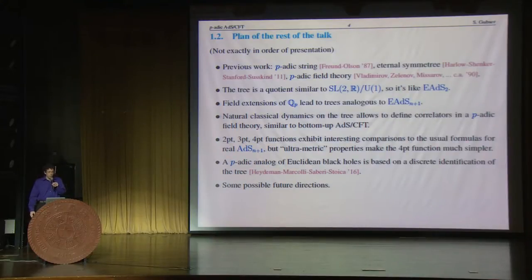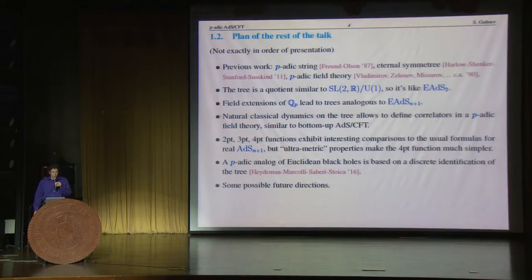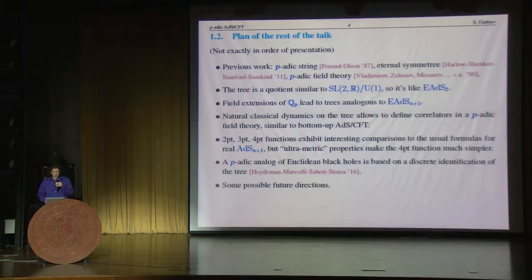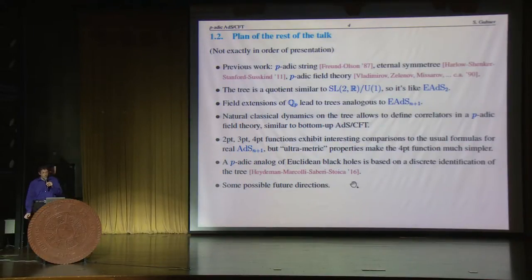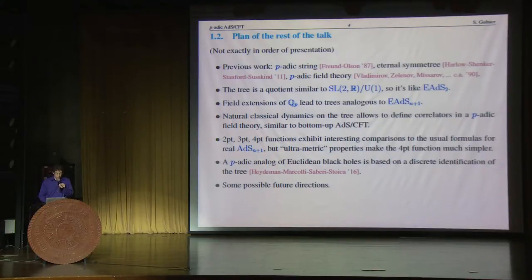In particular, I will show you three-point and four-point functions, which exhibit interesting comparisons to the usual formulas for real AdS n+1. But there's a crucial problem in the p-adics called ultrametricity, which makes the four-point function much simpler than you expect. I will also describe at least a little bit of another work that came out shortly after ours by a Caltech group — in particular, they describe the p-adic analog of the BTZ black hole in Euclidean signature. And I'll indicate a few possible future directions.